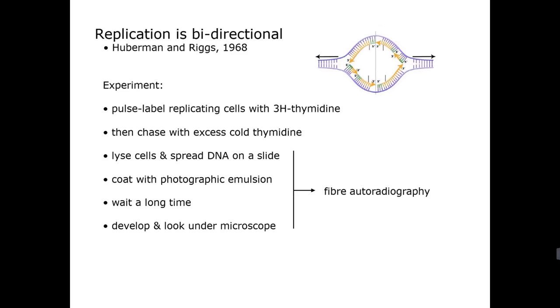The next experiment that I want to talk to you about is an experiment that was done by Joel Huberman and Riggs. And this was done in 1968. And what Huberman and Riggs set out to do was answer the question as to whether DNA replicated unidirectionally or bidirectionally. And the idea is kind of illustrated here. So if you consider an E. coli chromosome, we know that E. coli chromosome DNA is circular.